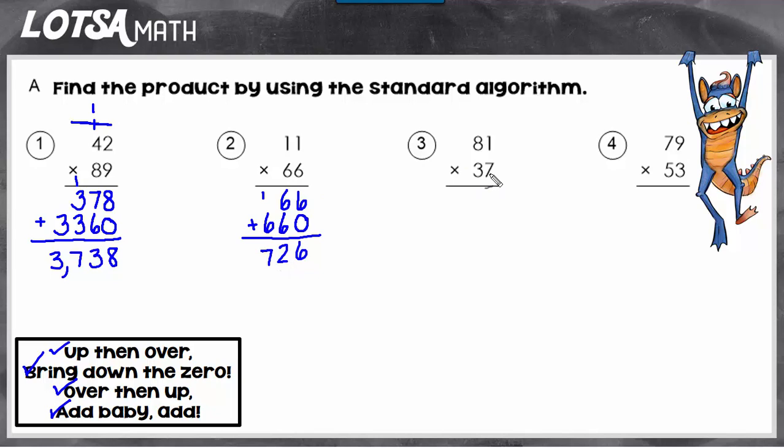Let's do number 3. So we start right here in the bottom factor in the ones place. And we go up, then over, bring down the zero. And then we switch to the other digit and go over, then up, and then add it all up. So our answer is 2,997.